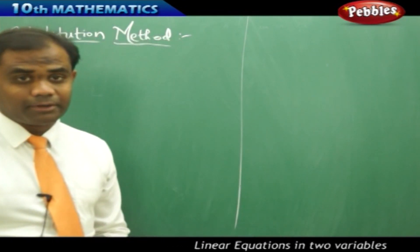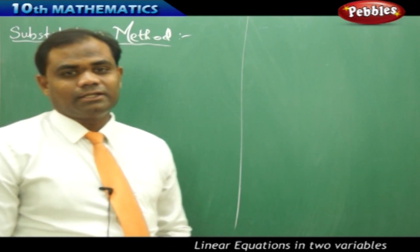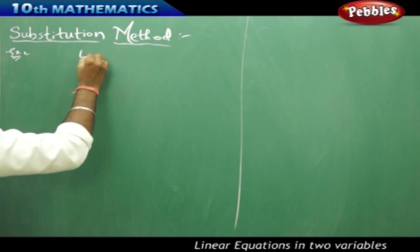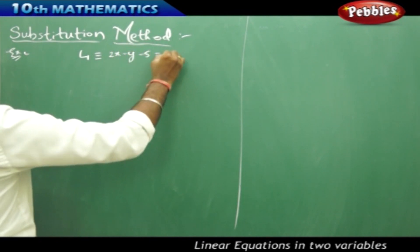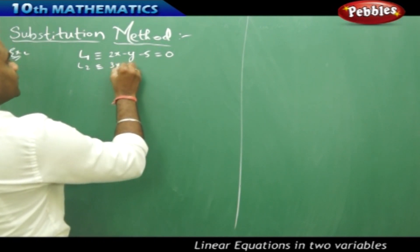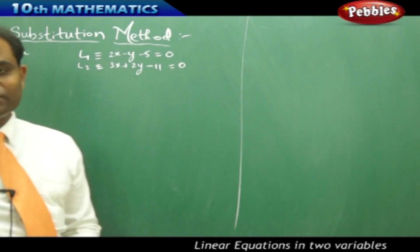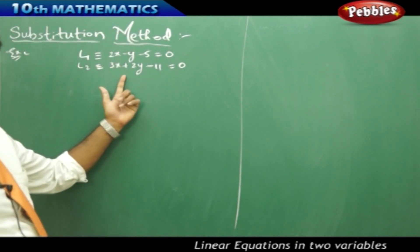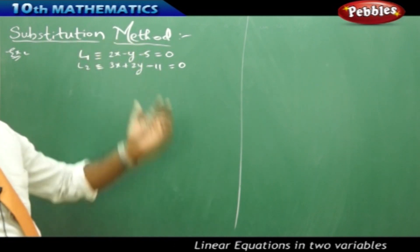Let's see the substitution method in brief by taking an example problem. I take two lines: line L1 is 2x minus y minus 5 equals 0, and line L2 is 3x plus 2y minus 11 equals 0. I want to find the intersection, that is, the values of x and y using the substitution method.